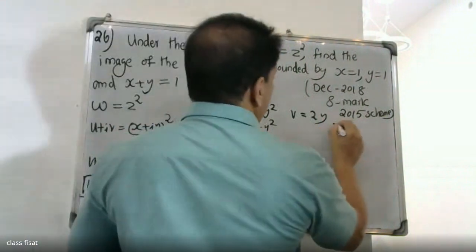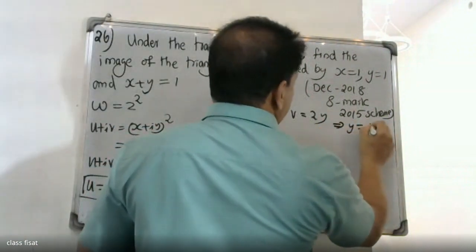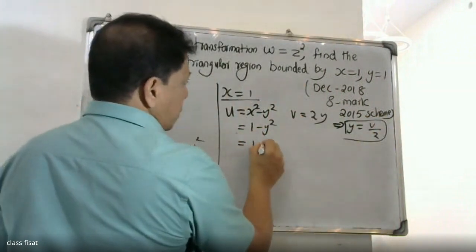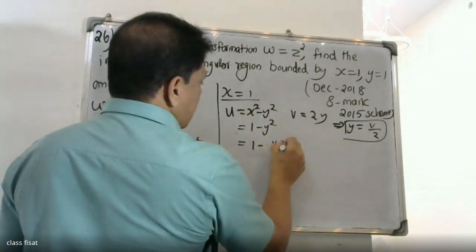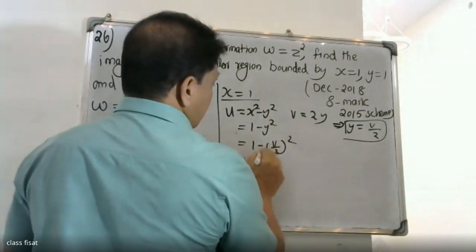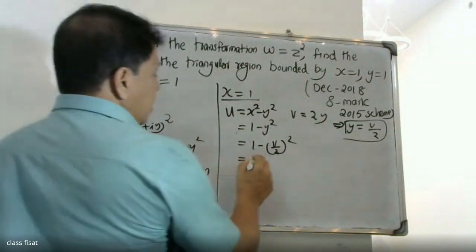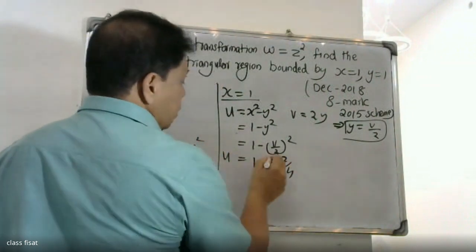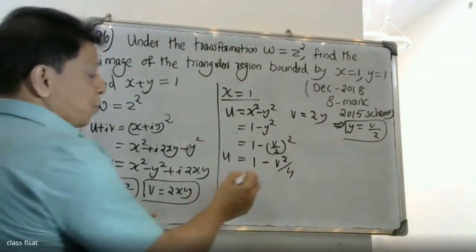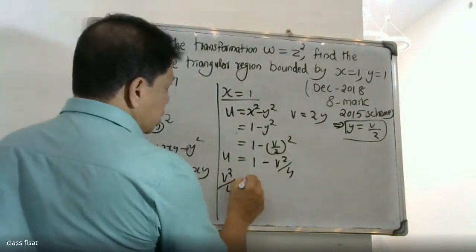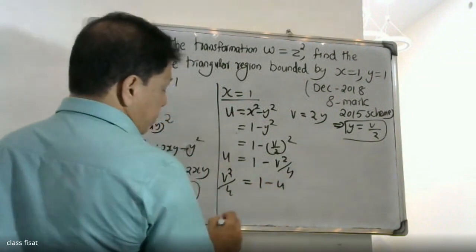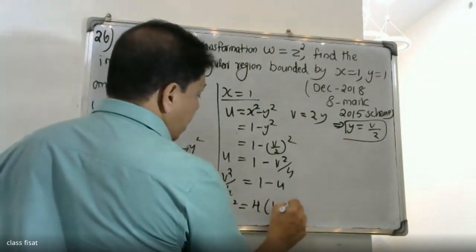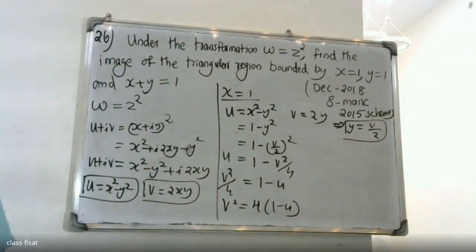When x equals 1, v equals 2xy so y equals v by 2. Substituting into u equals x squared minus y squared: u equals 1 minus v by 2, all squared, giving u equals 1 minus v squared by 4. Therefore v squared by 4 equals 1 minus u, so v squared equals 4 into 1 minus u.